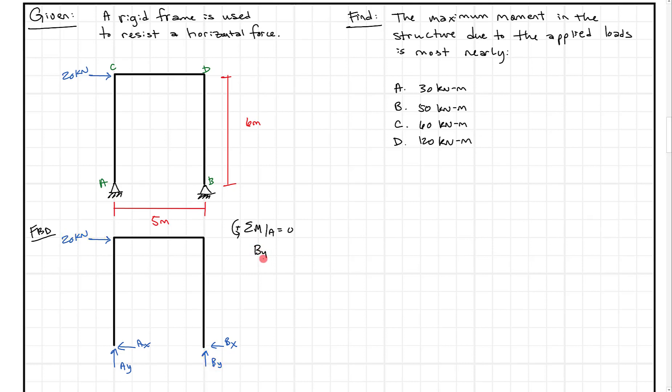So BY times 5 meters minus 20 kilonewtons times 6 meters equals zero. And when we solve this, we're going to get BY equals 20 times 6 is 120 divided by 5. That's going to be 24 kilonewtons.